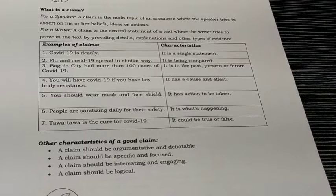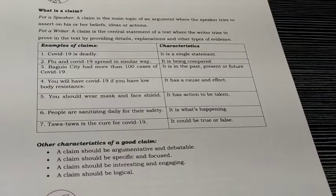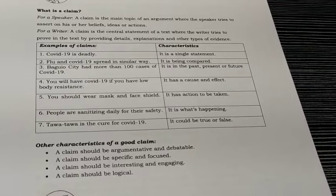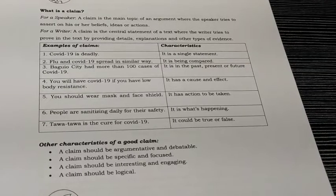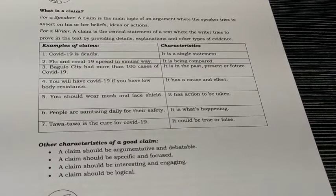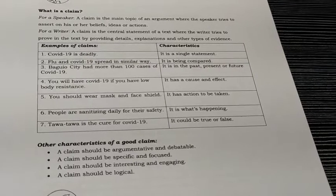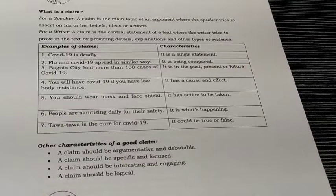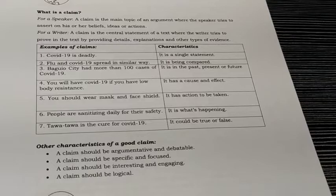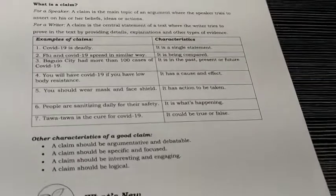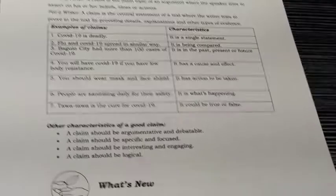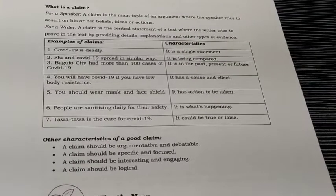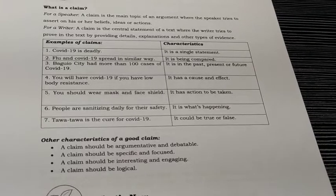In number 1, it's a single statement because we only have one subject: COVID-19. Number 3: 'Baguio City had more than 100 cases of COVID-19.' It signifies a particular time — past, present, or future. Here, the word 'had' indicates past events, showing something that happened in the past, present, or will happen in the future.